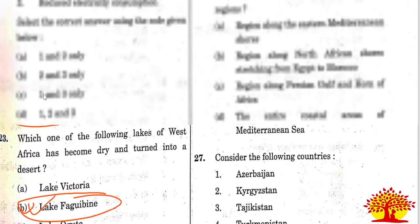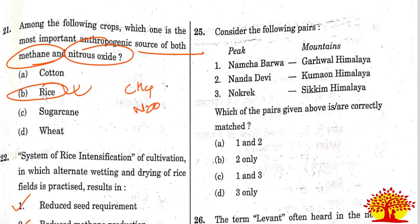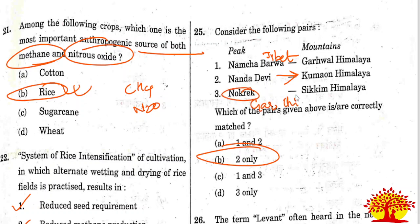Twenty-fifth question on Himalayan mountains, peaks and their locations: Only statement 2 is correctly matched - Nanda Devi is in the Kumaon Himalayas. Option B is the right answer. Statement 1 is wrong because Namcha Barwa is in Tibet, not as stated. Statement 3 regarding Meghalaya and Garo Hills is also not correct.